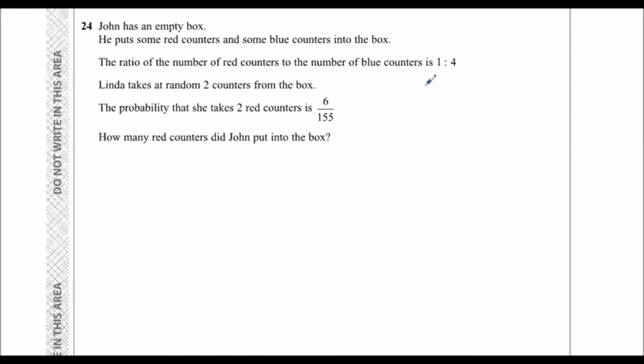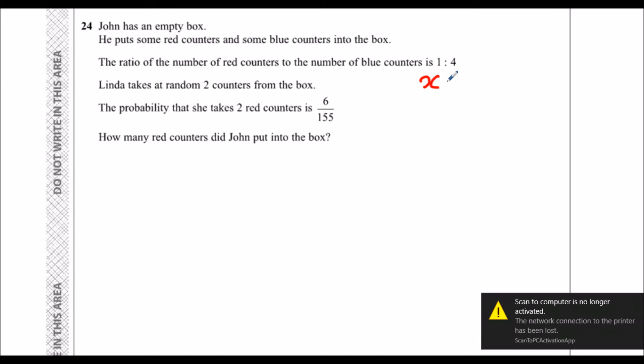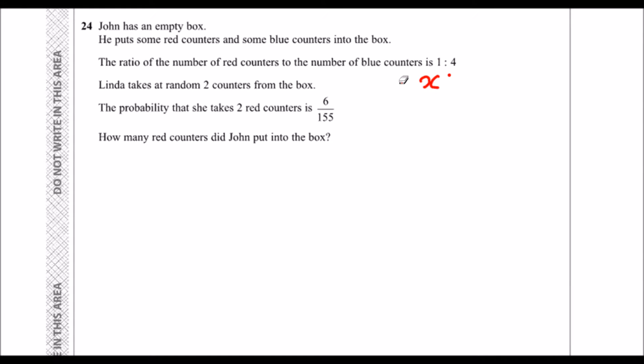So if we say the number of red counters was x, that means we've got four times as many blue counters, so the number of blue counters is 4x.